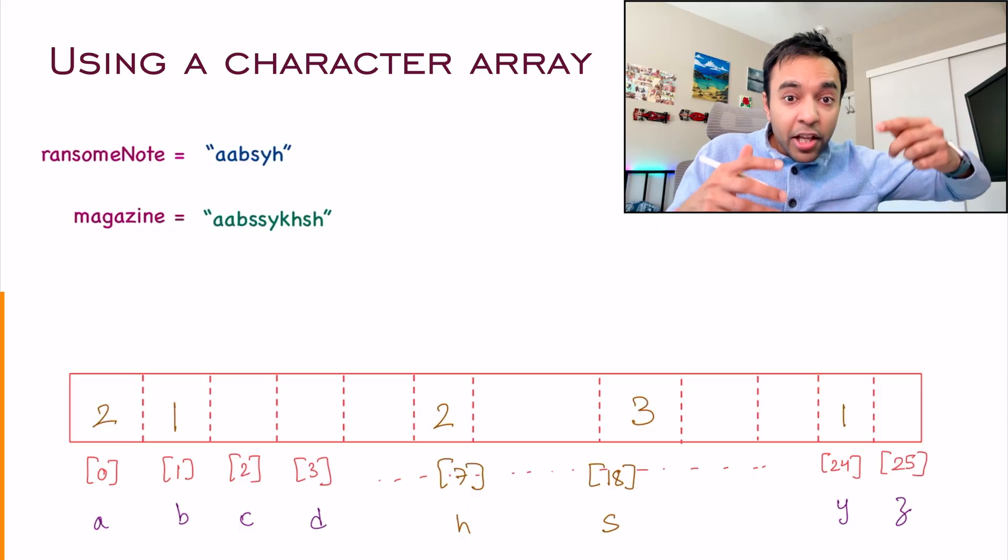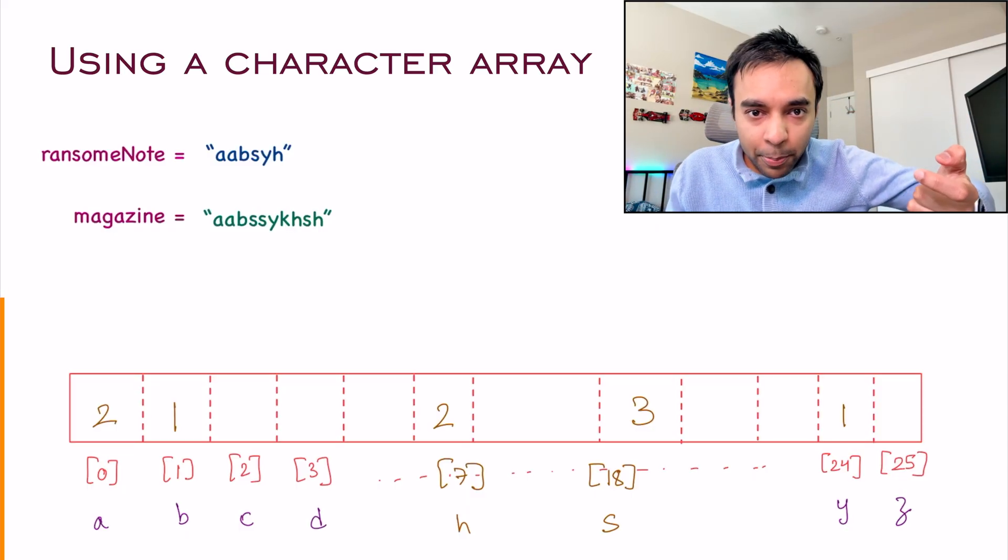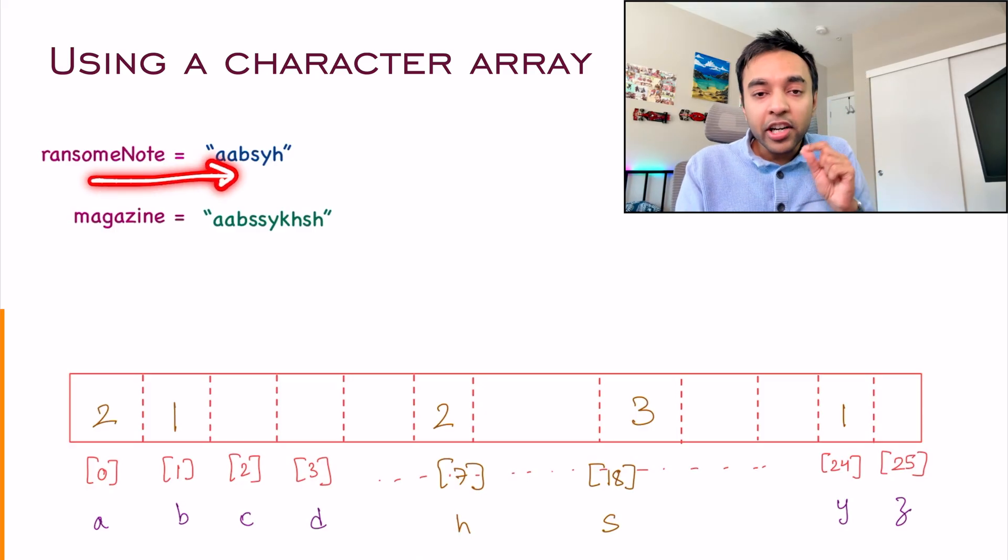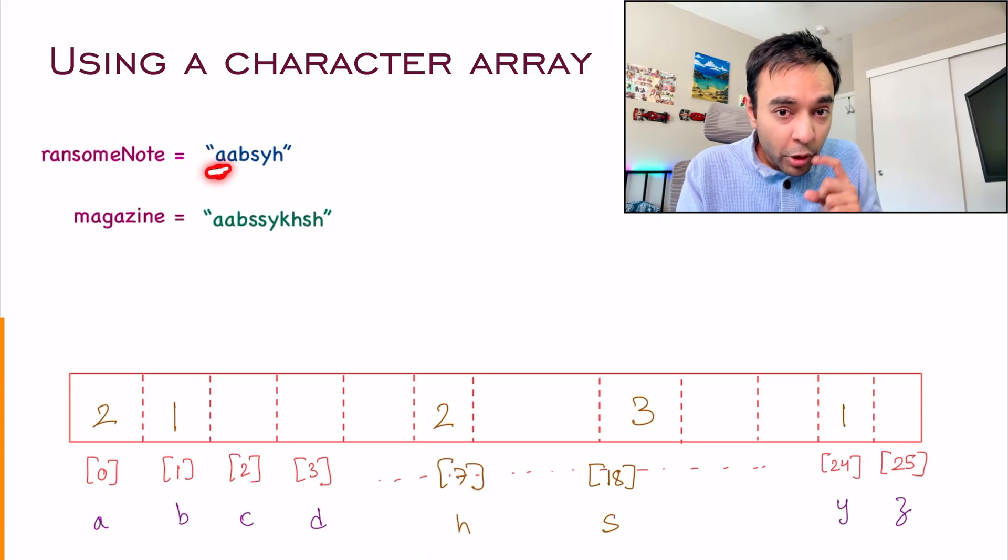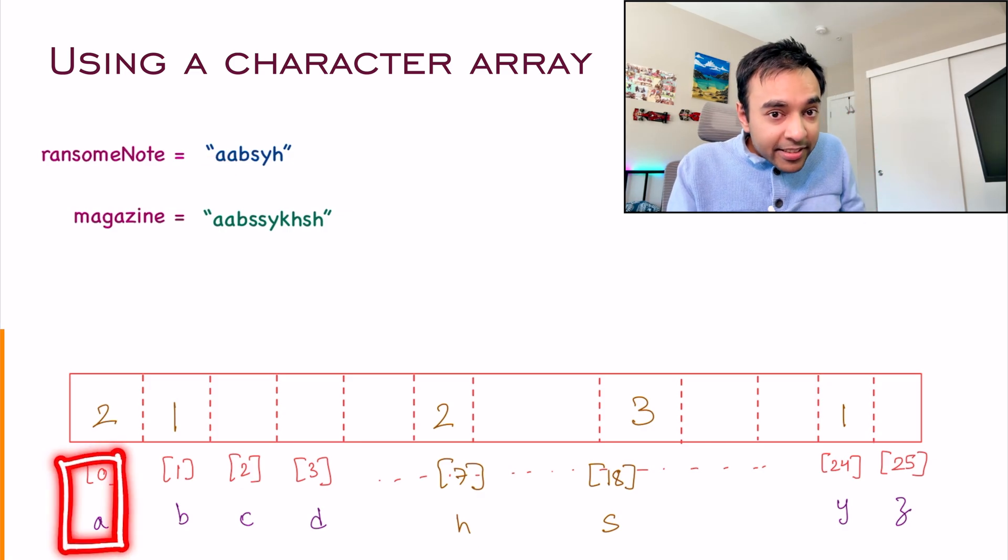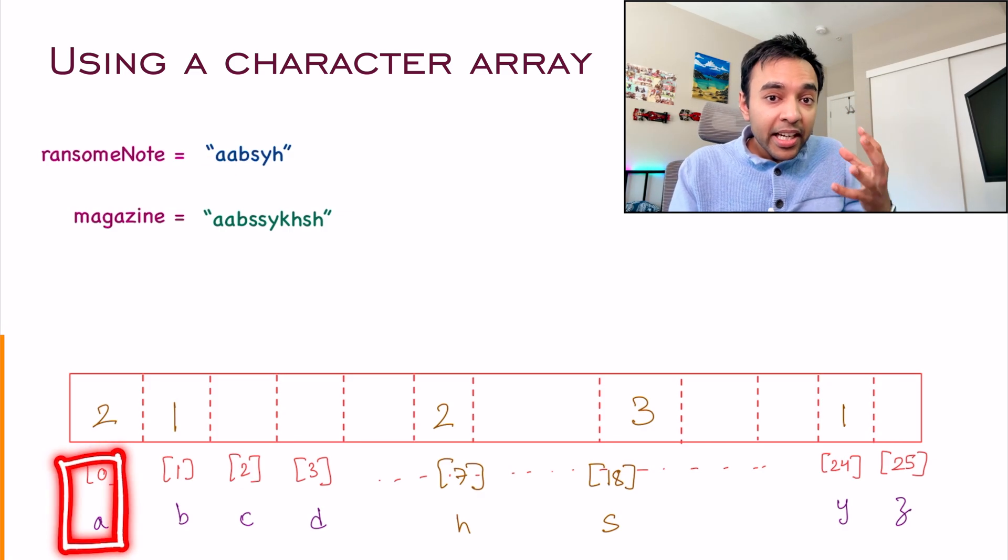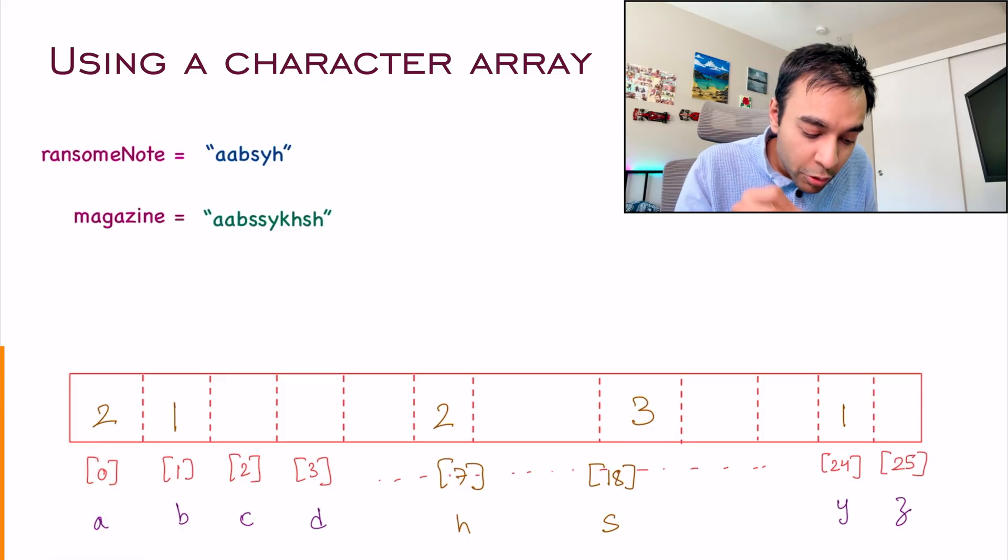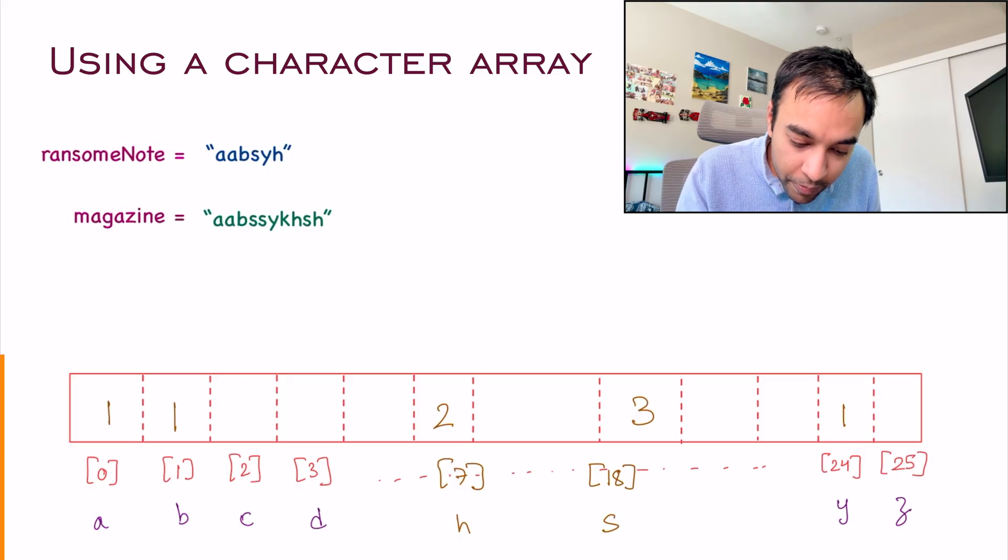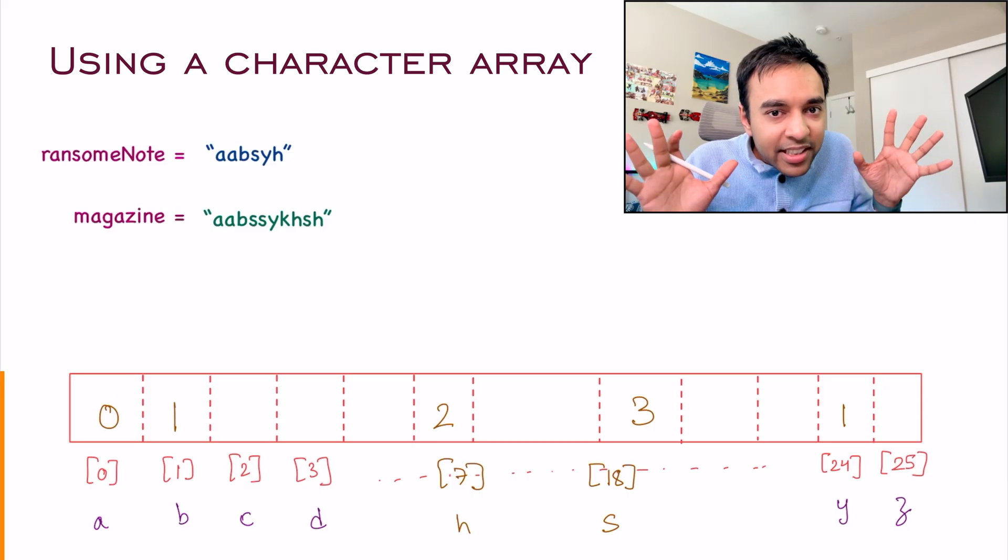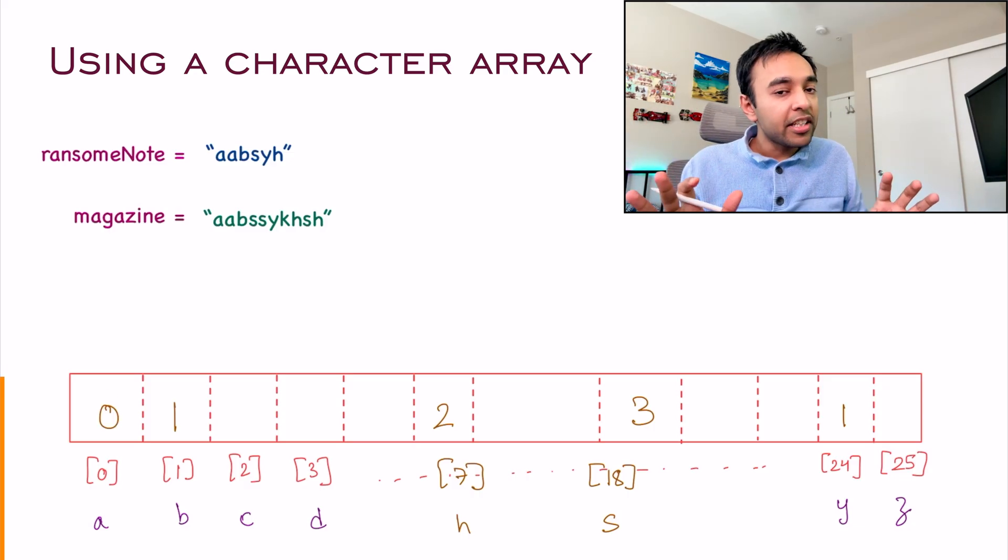But how do you utilize it? In the first iteration, you were incrementing each of the positions, correct? Now is the time to iterate over your ransom note. What is the first character? You get an A. So once again, arrive at this position. Since this value is 2, it means I can decrement something. I can consume one A. So all I do is decrement my count. The next character is again A, so I land here and decrement it. As long as it is reaching up to zero, it is fine. You don't have to worry.